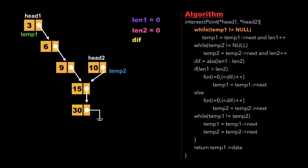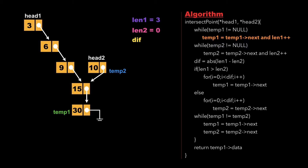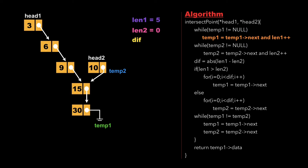We begin with a while loop checking whether temp1 is not null. Since the condition is true, we update temp1 as temp1.next and increment length1. We continue this process, repeatedly updating temp1 and incrementing length1, until temp1 becomes null after traversing all of linked list one.